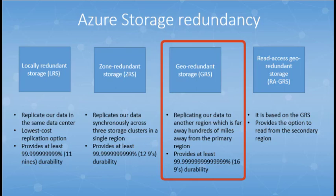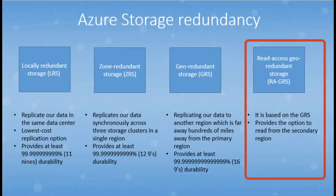The next is the geo-redundant storage, which helps us replicate our data to another region hundreds of miles away from the primary region. It provides at least 99% durability of objects over a given year. However, the data will be available as read-only if Microsoft initiates a failover from the primary to the secondary region. And last is the read access geo-redundant storage. It is based on GRS but also provides the option to read from the secondary region regardless of whether Microsoft initiates a failover from the primary to the secondary region.